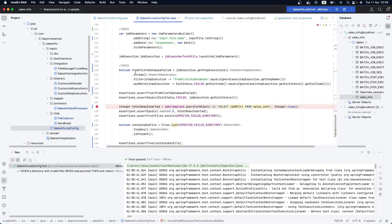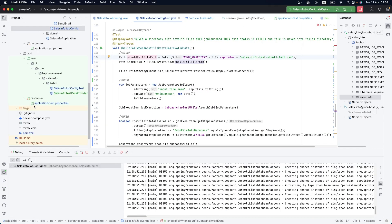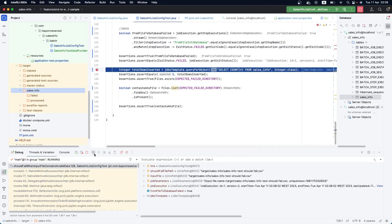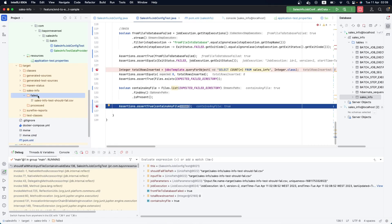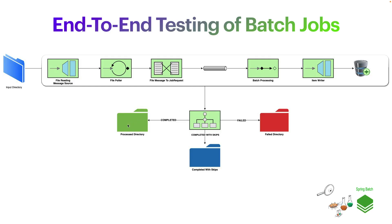The test passed. Running in debug mode, we can see in the target directory that the application is moving the file as expected, matching our actual implementation. Of course, this is testing after the fact since the code is already implemented. In a proper TDD approach, you write the test first, it fails, then you implement, run again until it passes, then refactor.